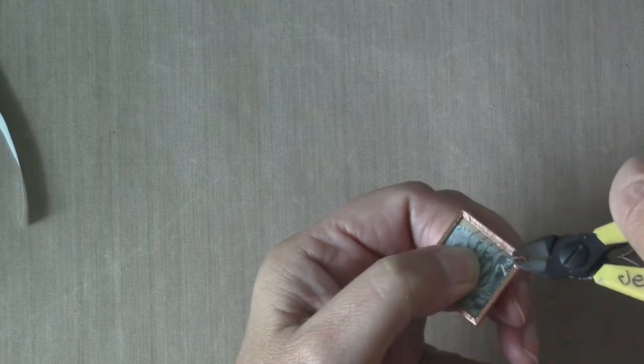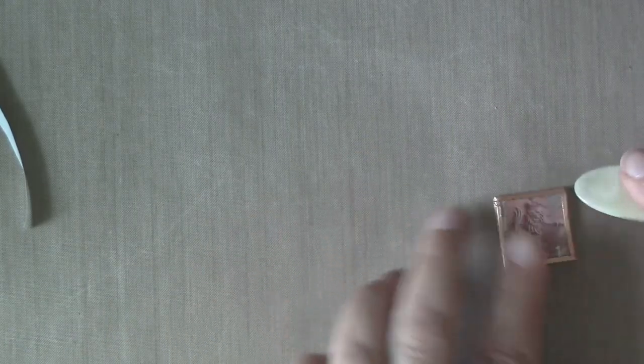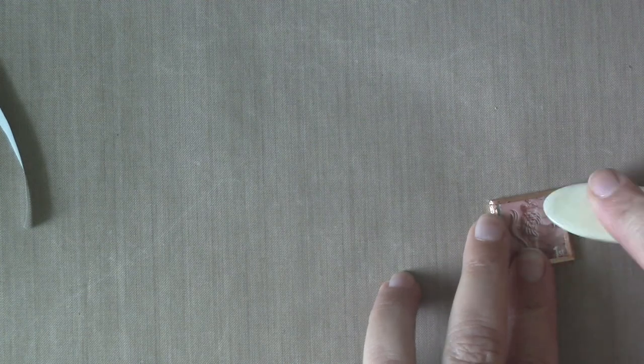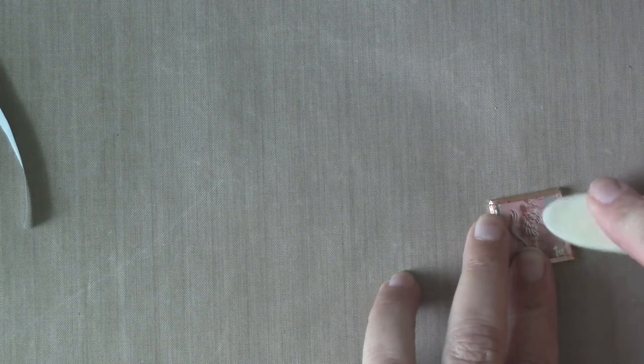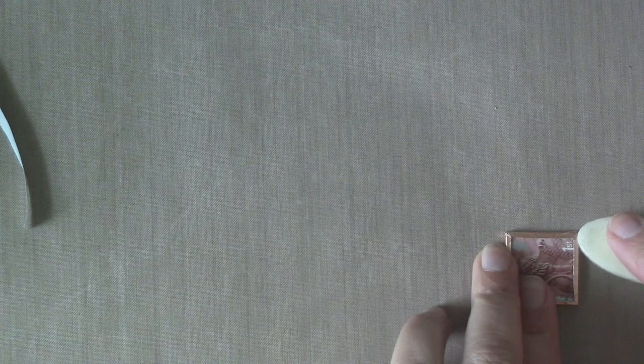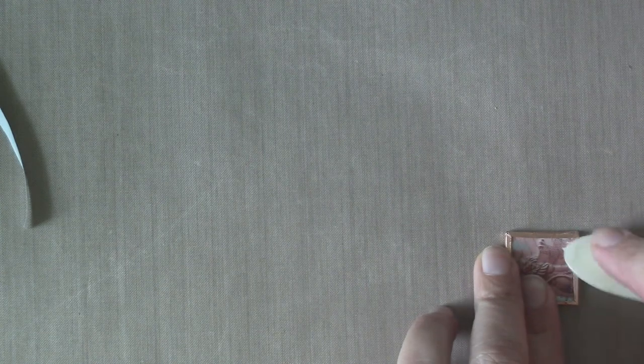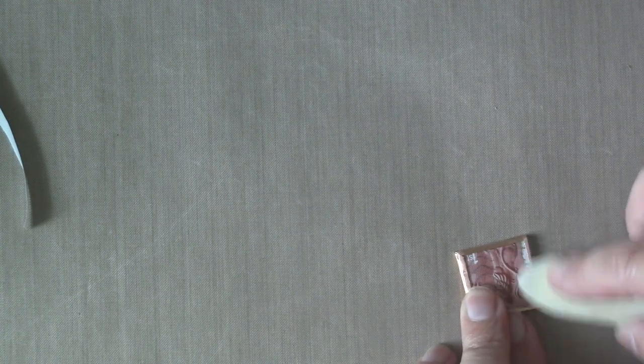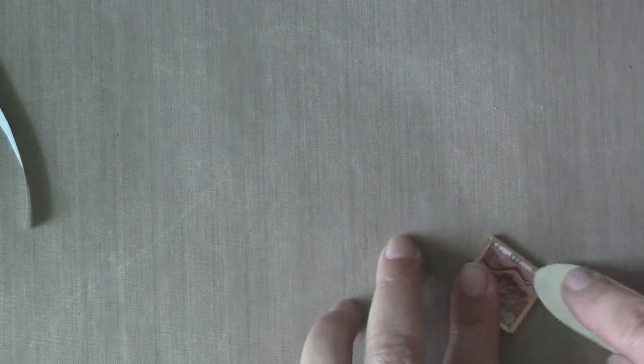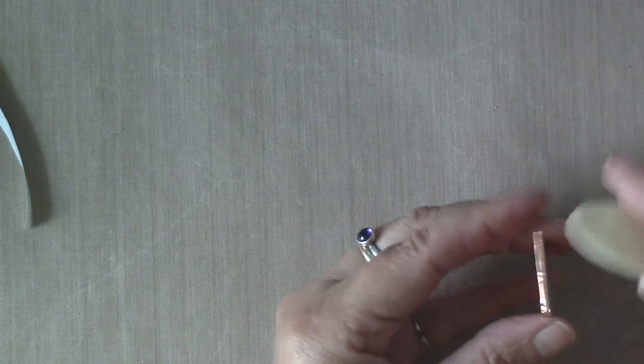The next step is the bone folder and you're going to burnish. So take a few minutes and just burnish this down. Do the long edges and then do the corners and then you also want to do the flat edge around the outside.